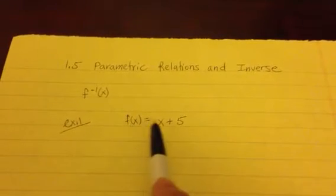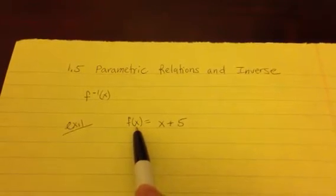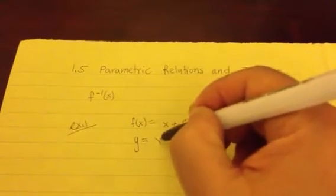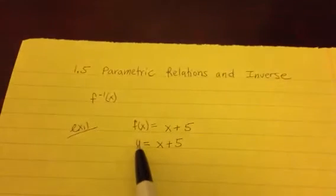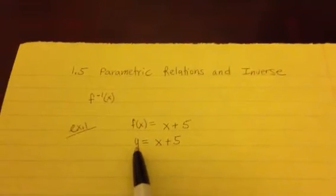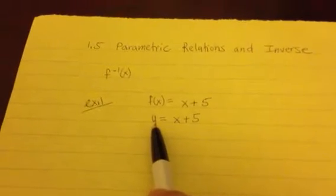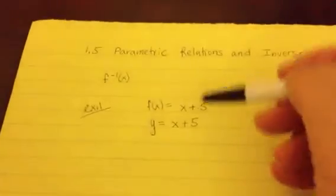Now if the equation is given as f of x equals x plus 5, what you're going to do is change f of x to y equals. So let's write that as y equals x plus 5. That's step number 1.